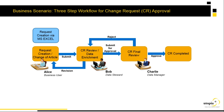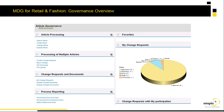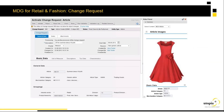I'm going to walk you through a three-step workflow change request creation and approval process. First, Alice as a business user creates an article master. Bob, acting as the data steward, reviews the master data. Then Charlie does a final review, and once approved it becomes a valid record in ECC. I'll also walk you through request creation via a Microsoft Excel file. I'm going to skip the remaining screenshots and walk you through the demo now.